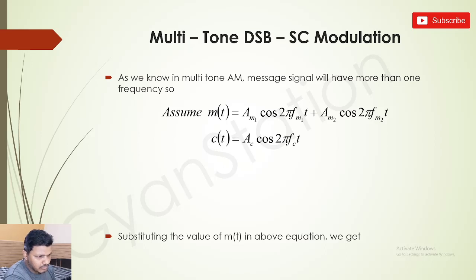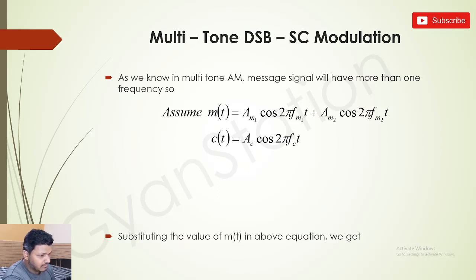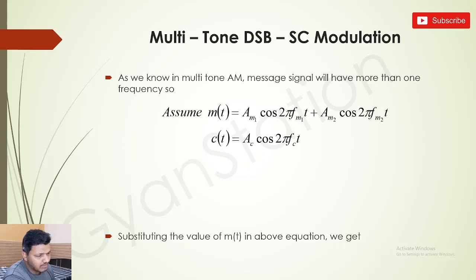And as we know, c(t) — which is our carrier signal — is Ac·cos(2π·fc·t). Obviously fc is far larger than fm2 and fm1, because fm1 and fm2 are on the order of kilohertz and fc is on the order of megahertz or even gigahertz.